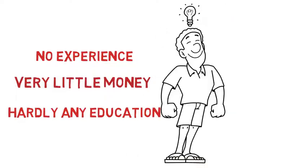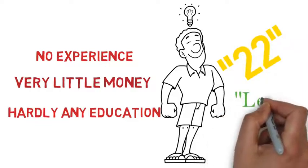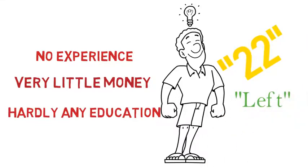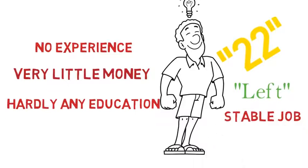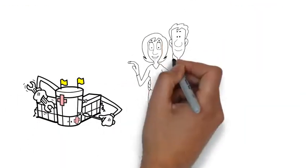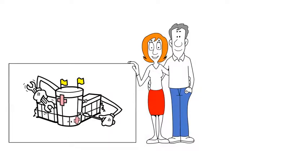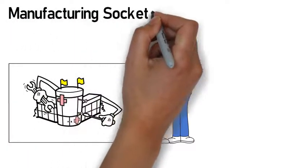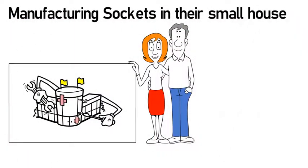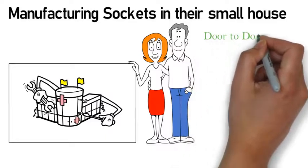So when he turned 22, he took a big decision. He left his stable job and started his own small manufacturing company. He and his wife started manufacturing sockets in their small house. They both went door to door selling it.